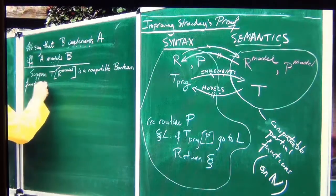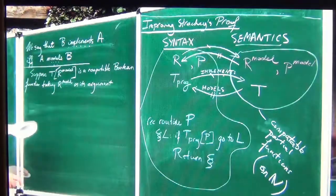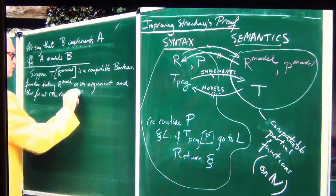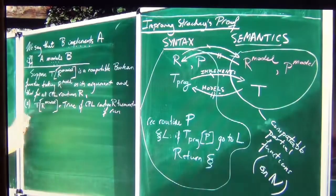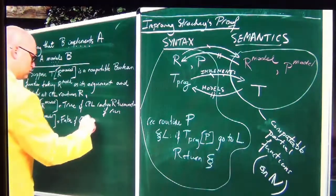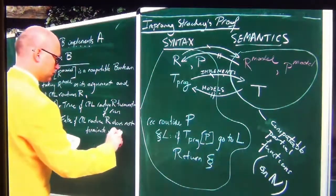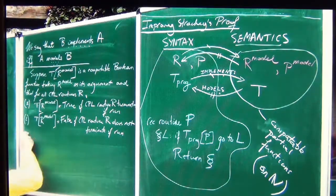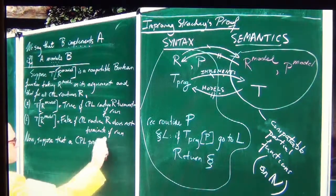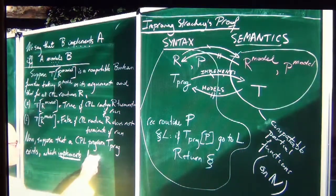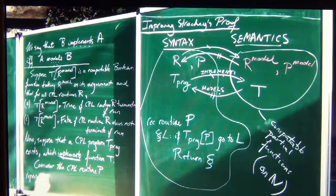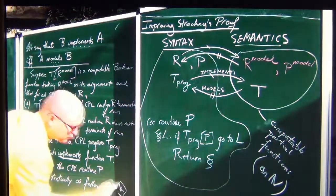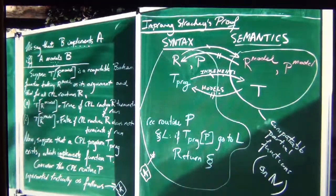Here's my analysis. Suppose T of R-model is a computable boolean function taking R-model as its argument. Suppose that for all CPL routines R: (1) T of R-model is true if CPL routine R terminates if run, and (2) T of R-model is false if CPL routine R does not terminate if run. Now suppose that a CPL program T-prog exists which implements function T. Consider the following CPL routine P — precisely: recursive routine P, and so on.